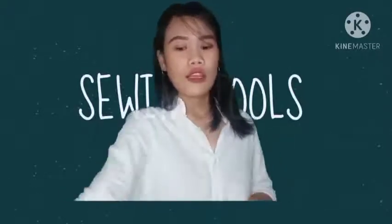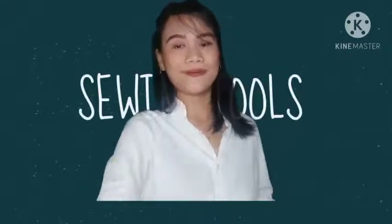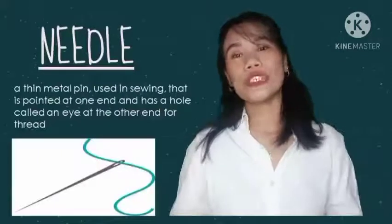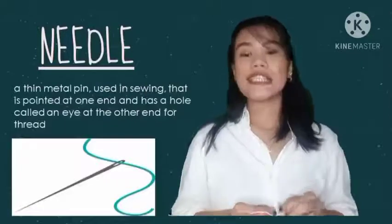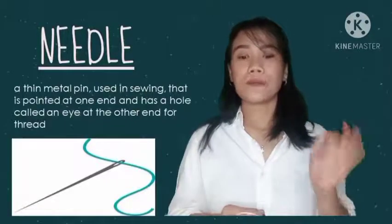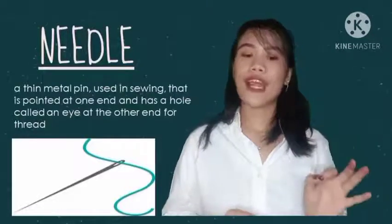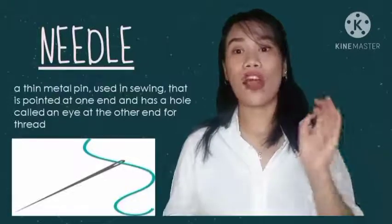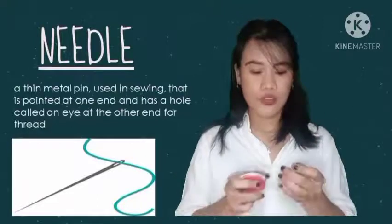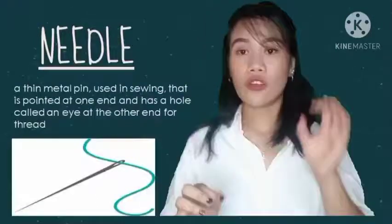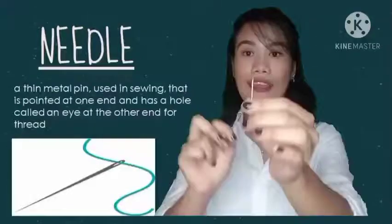The first tool is the needle. A needle is a thin metal pin used in sewing that is pointed at one end and has a hole called an eye at the other end for a thread. I will show you how to put the thread through the eye.